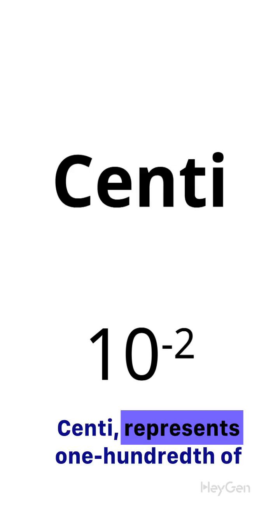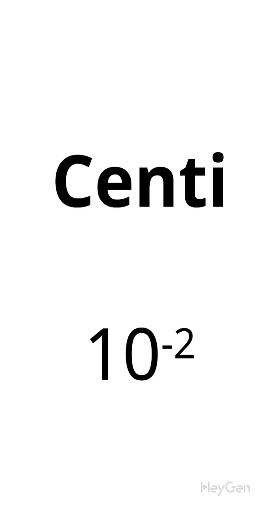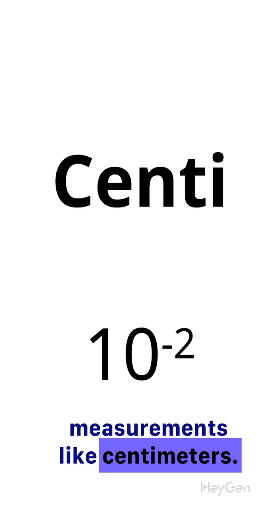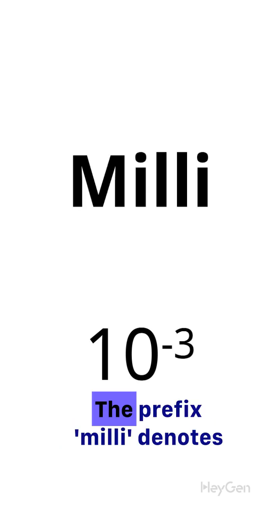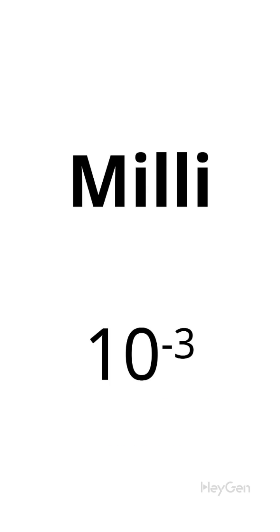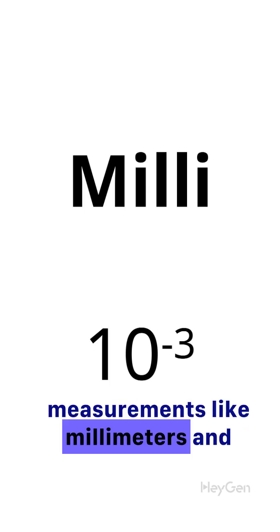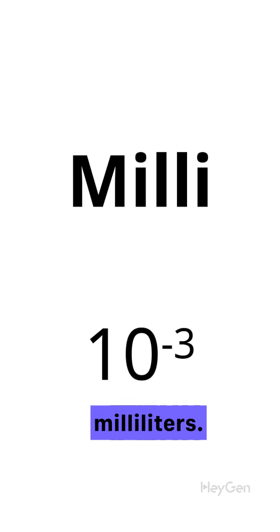Centi represents one-hundredth of a unit. It's commonly used in measurements like centimeters. The prefix milli denotes a factor of one-thousandth. It's commonly used in measurements like millimeters and milliliters.